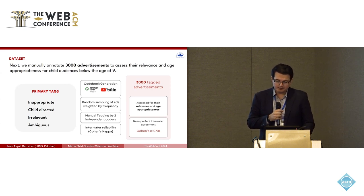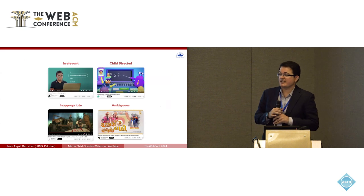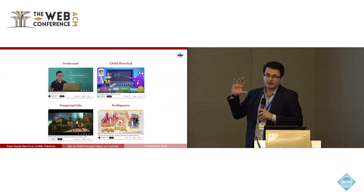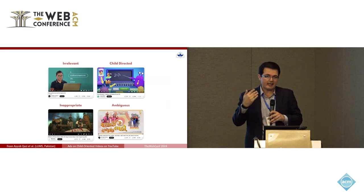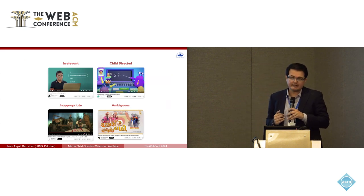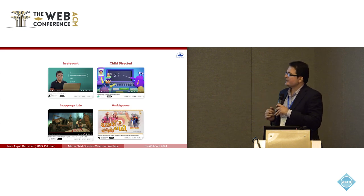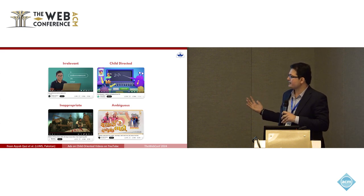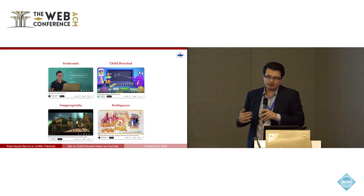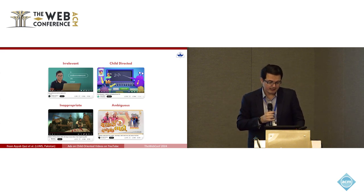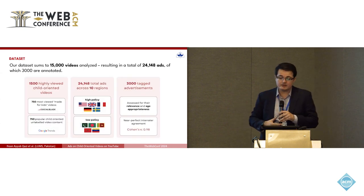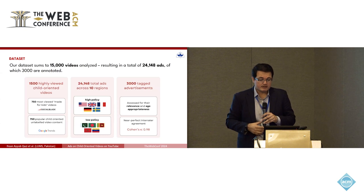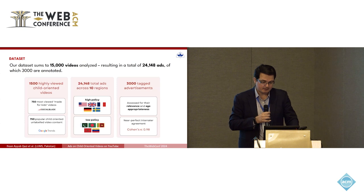As an example of the ad categories: top left shows a professional email-to-purchase ad, which is irrelevant for children below nine; top right shows child-directed content; bottom left shows inappropriate content with blood; and bottom right shows an ambiguous ad. Taken together, our dataset covers 15,000 videos analyzed, resulting in nearly 24,000 ads, of which a random sample of 3,000 were annotated.